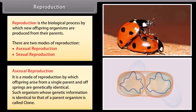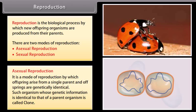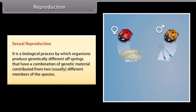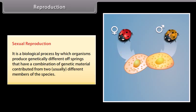Such organisms whose genetic information is identical to that of a parent organism are called clones. Sexual reproduction is the biological process by which organisms produce genetically different offsprings that have a combination of genetic material contributed from two usually different members of the species.